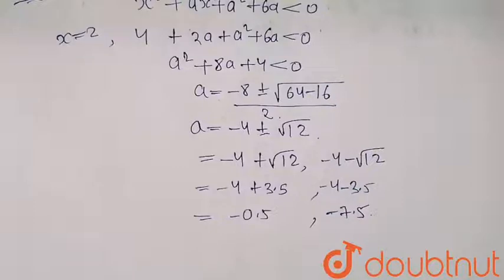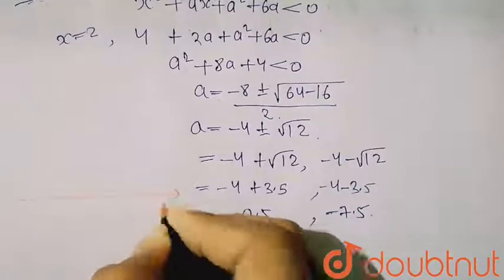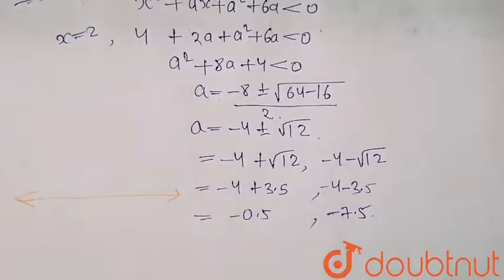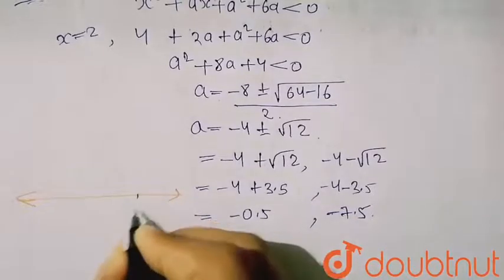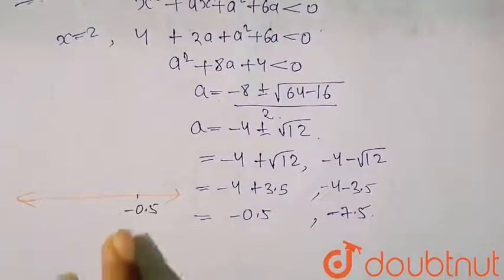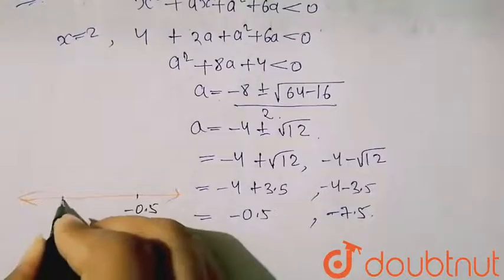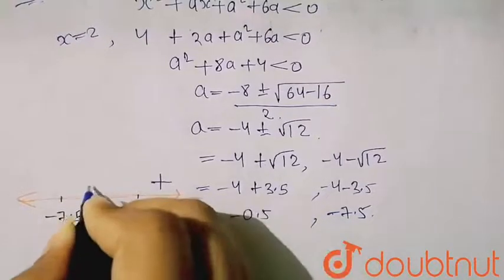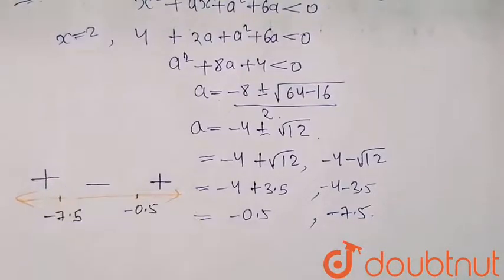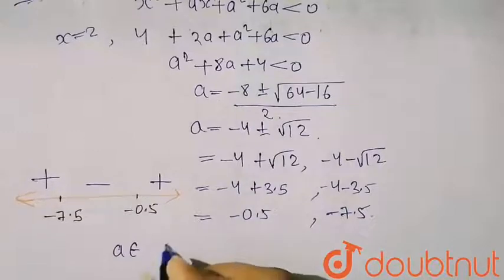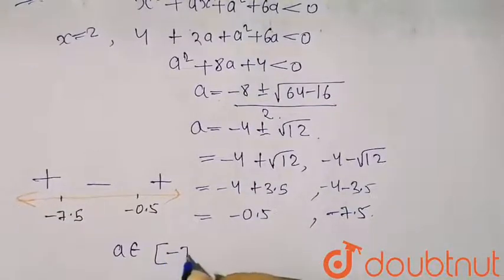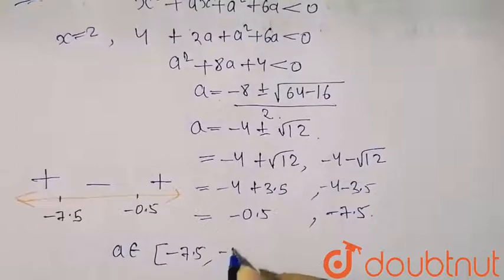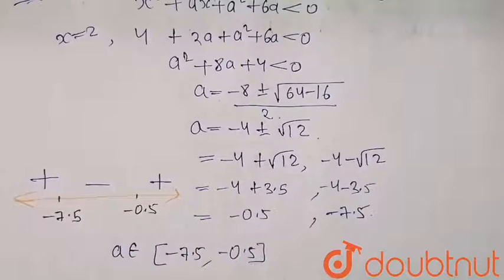Let's see it on the number line. This is my number line. My -0.5 will be here and my -7.5 will be here. So we will take alternative signs: plus, minus, then plus. Here my a will belong to (-7.5, -0.5).